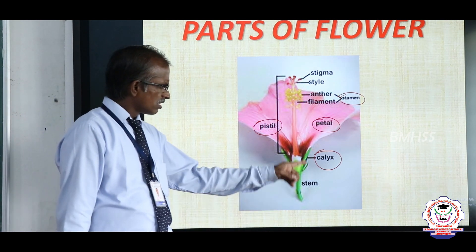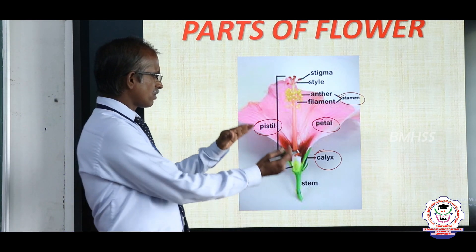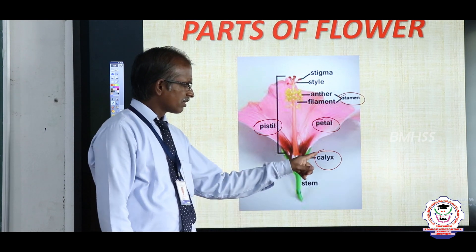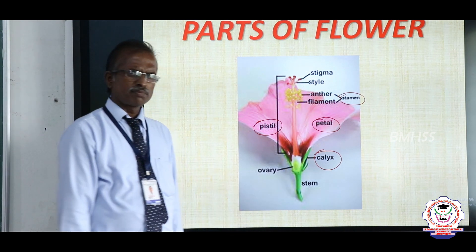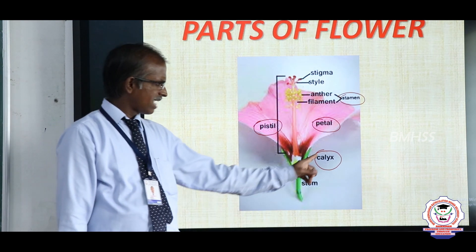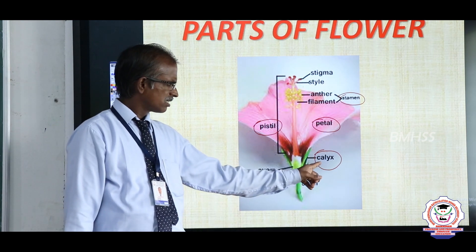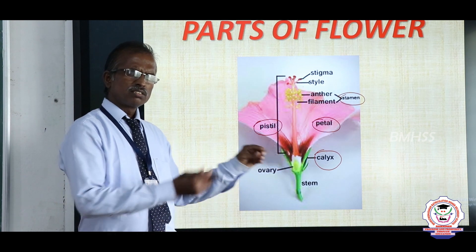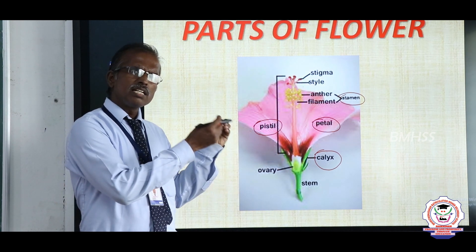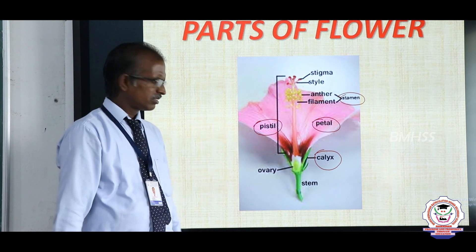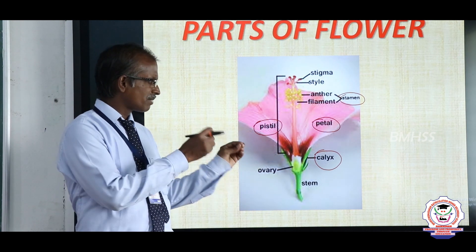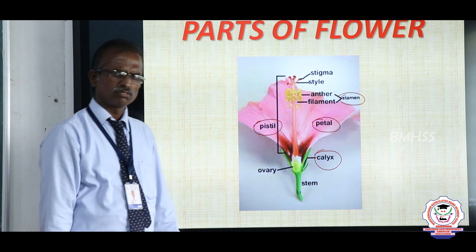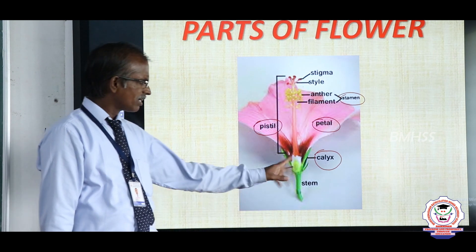From the outermost to inner, the first whorl of the flower is calyx, which is green in colour and helps in a protective function.